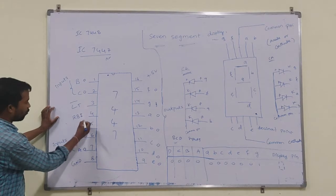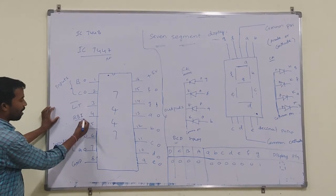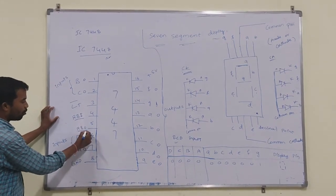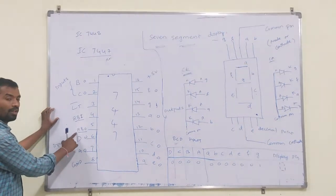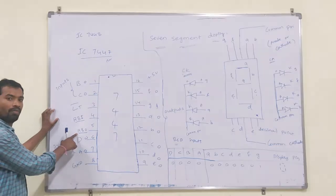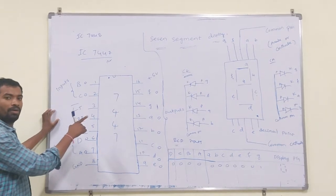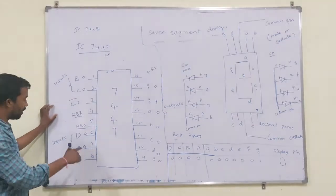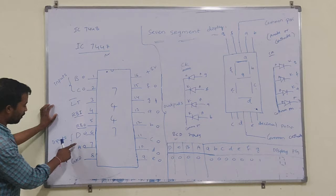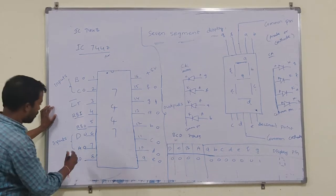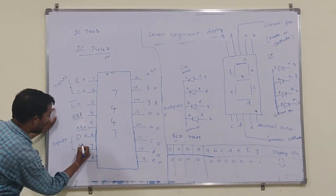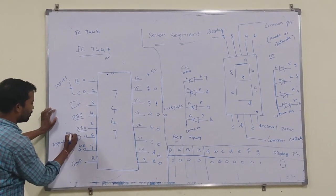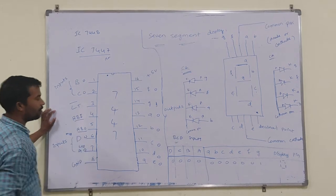The fourth pin is the ripple blanking input and ripple blanking output. These pins are used when multiple seven segment displays are cascaded. Pin A is the LSB bit and pin D is the MSB bit.